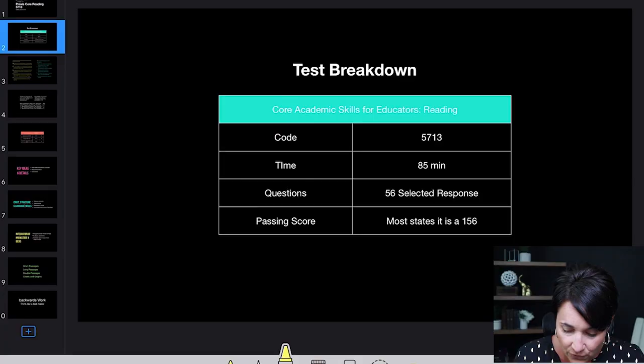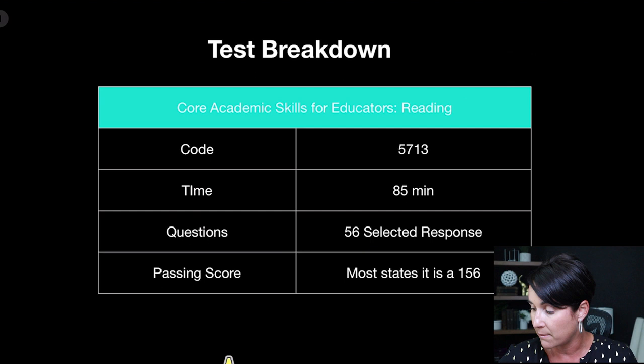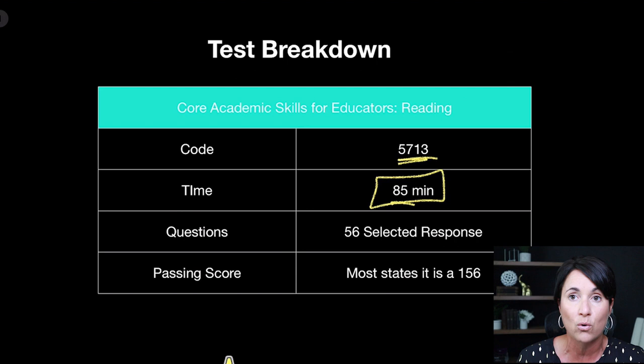So this is Praxis Core Reading, code 5713, and it's all about reading comprehension. Two things you need to know about this test. I'm going to talk about the scoring because we've had a lot of questions about that, and I'll get my calculator out so I don't mess up the math. The code for this test is 5713. You have 85 minutes, according to the Praxis Core Study Companion.